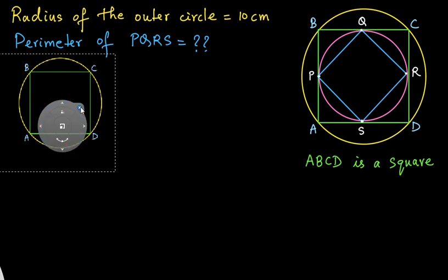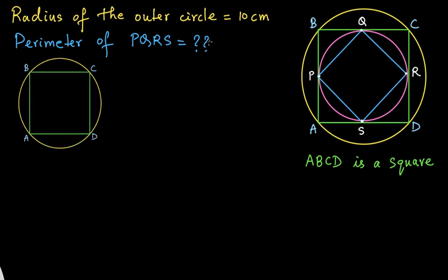The radius of the circle is given as 10 centimeters. If we join points A and C, the length AC is both a diagonal of the square and the diameter of the circle. Taking the center of the circle, we have radius 10 on each side, so the length AC equals 10 plus 10, which is 20 centimeters.